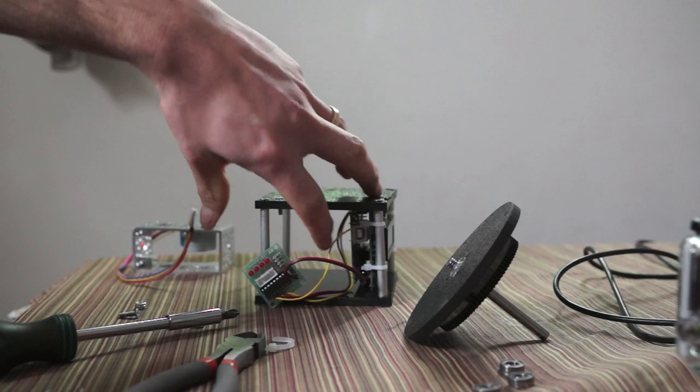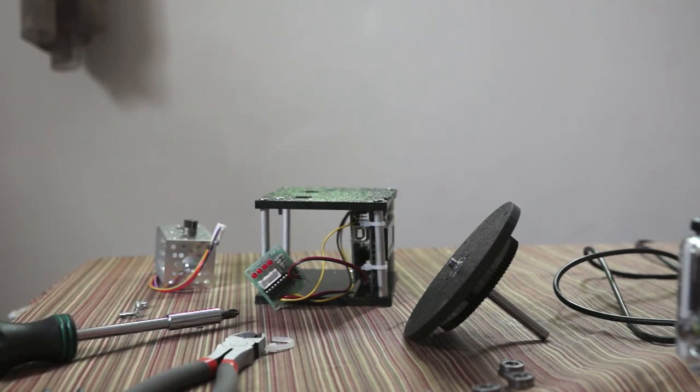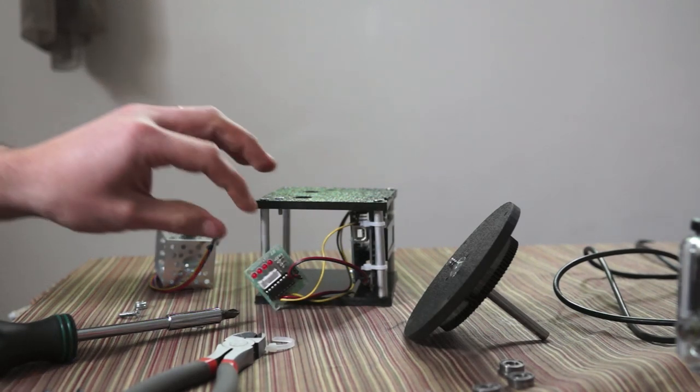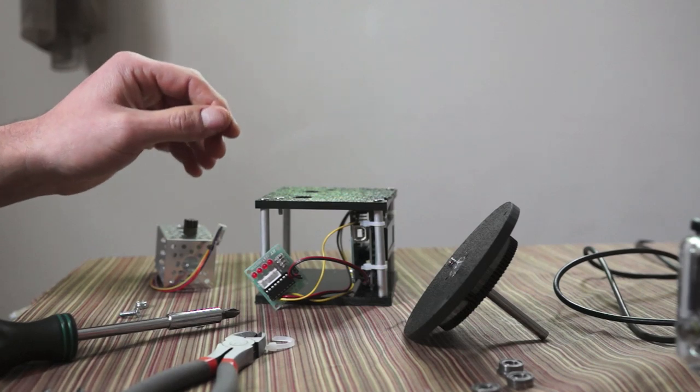And still have the clearance I need between the Arduino and the motor mount when it's in place. So you can make it a little bit smaller. Initially I, I hadn't planned on, I planned on putting it in like a box.